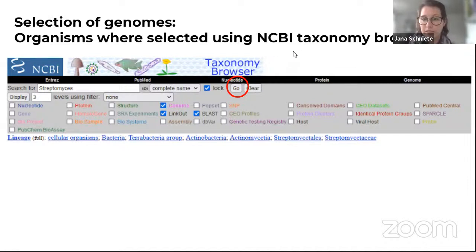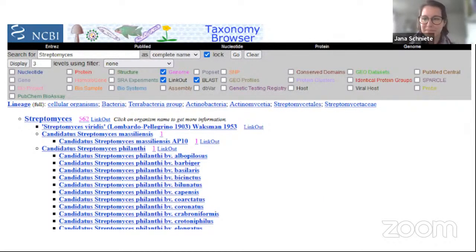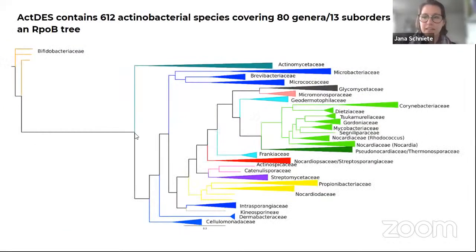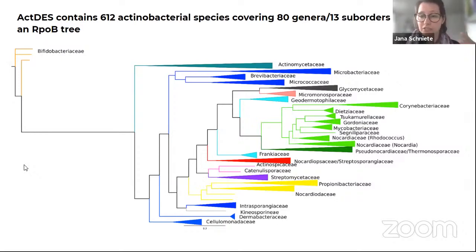For genome selection, I used the NCBI taxonomy browser — a very simple search function where you just click to show genomes with a sequence and hit Go, ending up with a list of all the different species. You can then download all those genomes, which took quite some time, as you can imagine. Here is an rpoB tree collapsed down to the different families, containing all 612 species, which cover 80 different genera and 13 sub-orders. This is just to illustrate the range of species covered.